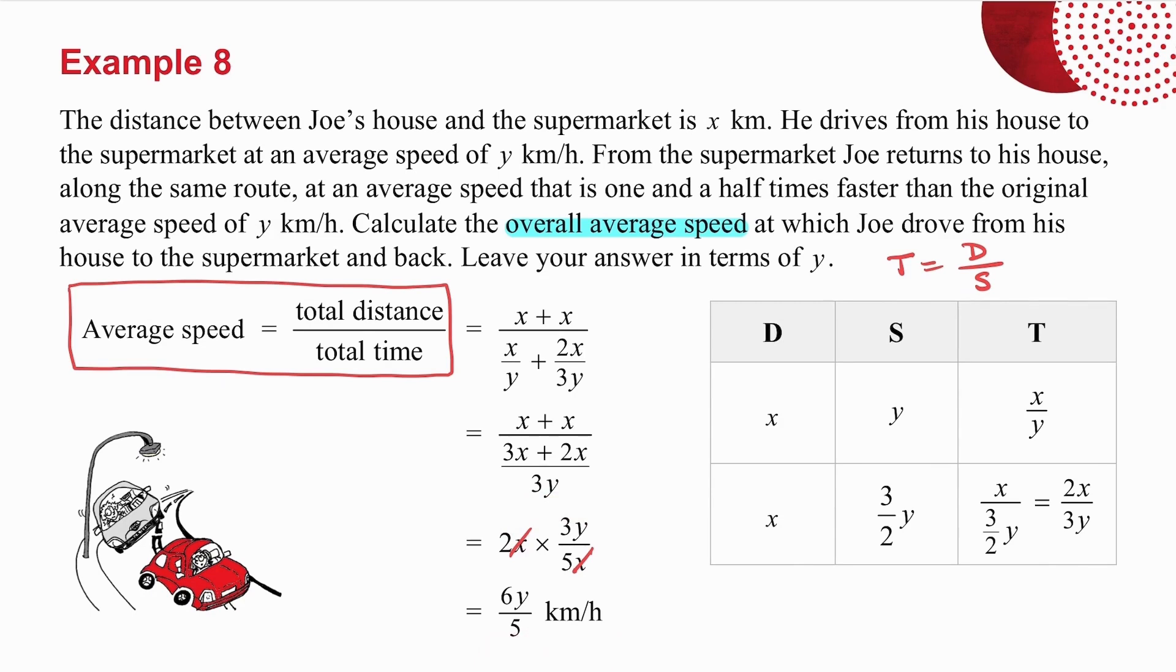And the question said to you, leave your answer in terms of y. Now if you want to check this one, it's a lot more difficult than the previous questions we've done. So what you would need to do if you wanted to check is assign a distance of x and assign a speed of y and check and see whether those numbers fit in with that. And you can pick a number of different values and see if it does work. But the question did say, leave your answer in terms of y, which means that is my answer.